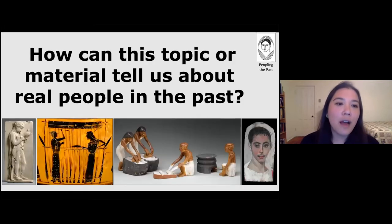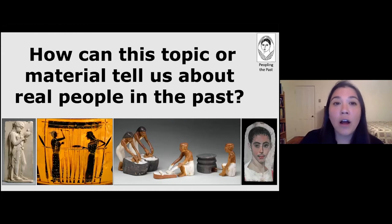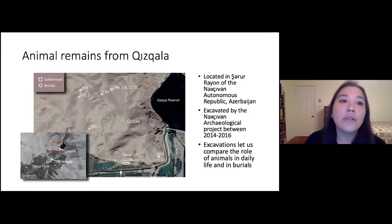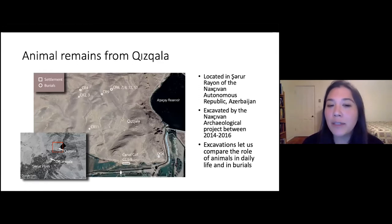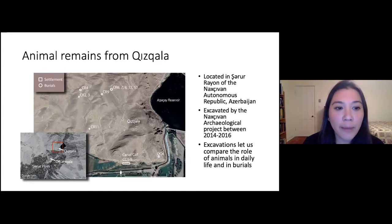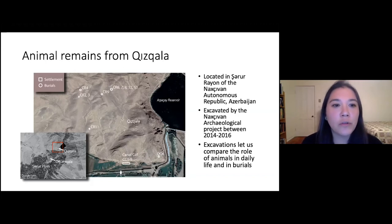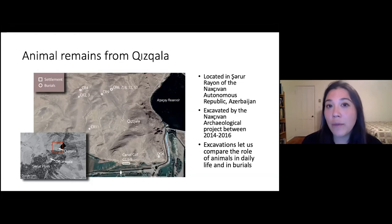How can this topic or material tell us about real people in the past? The animal remains I'll talk about today entered the archaeological record by deliberate human choices about what to include. At Kiskala, they let us look at what people were consuming on a day-to-day basis, but also what animals seemed like suitable companions to send with the dead into the afterlife. The settlement parts of the site are shown on the aerial image in rectangles, and the burials are shown on the upper low hills in circles. The site was excavated by the Nakhchivan Archaeological Project, a joint American-Azerbaijani project.